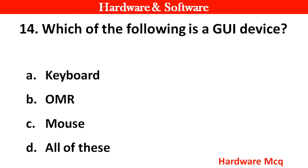Question 14: Which of the following is a GUI device? Options: A. Keyboard, B. OMR, C. Mouse, D. All of these. Right answer is option C — Mouse.